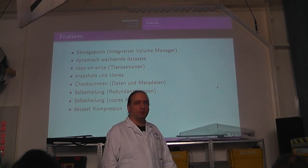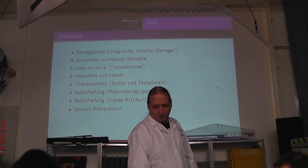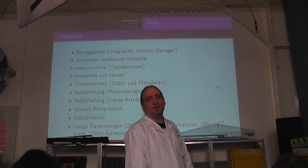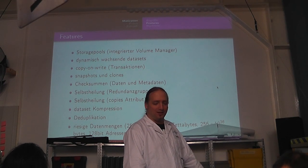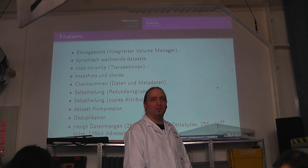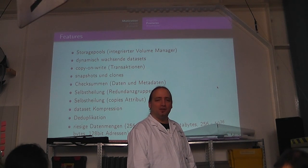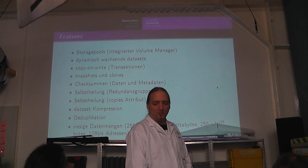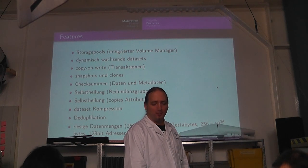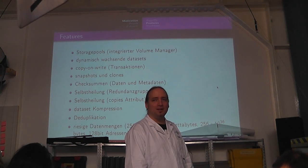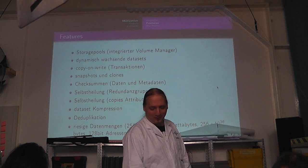Und diese Datasets können auch transparent komprimiert werden mit GZIP oder mit LZJB-Kompressionsverfahren. Dann bietet das Ding noch Deduplikation. Das ist für den Laptop allerdings jetzt wirklich dann nicht mehr geeignet. Das heißt, wenn sich irgendwie mehrere Blöcke dieselben Daten enthalten, dann wird das einfach auf einen Block zusammengeschrumpft. Das verbraucht irrsinnig viel Arbeitsspeicher. Also im FreeBSD-Wiki steht drin, dass davon ausgegangen wird, dass man mindestens 2 GB pro 1 TB nutzbarer Daten mit Deduplikation braucht. Erfahrungswerte scheinen da allerdings auch bis zu 5 GB zu gehen. Also ist eher was für größere Maschinen.